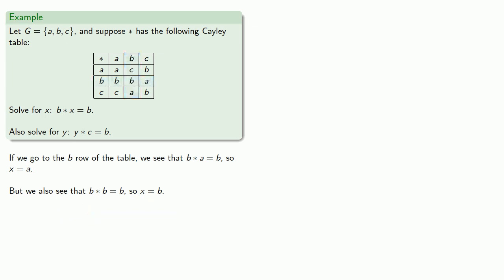Similarly, if I want to solve the equation Y star C equal to B, C is my second operand. So I'll go to the C column of the table, and that tells us that A star C is equal to B, and so Y is equal to A. And we also see that C star C is equal to B, and so Y is equal to C.